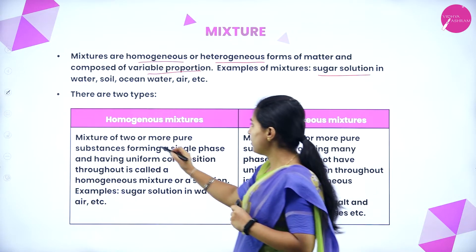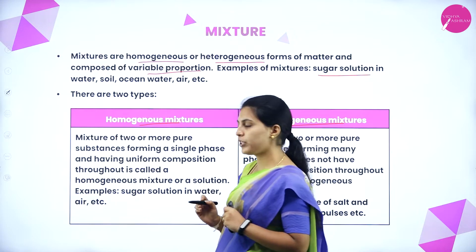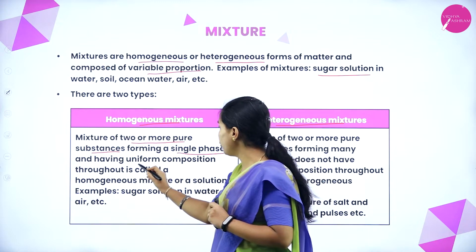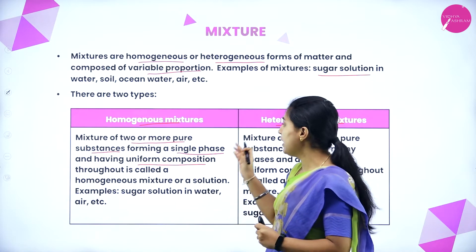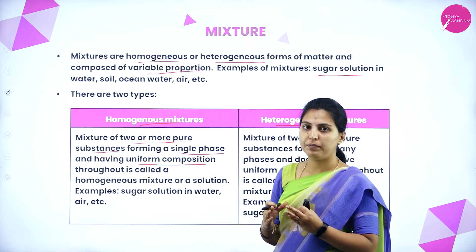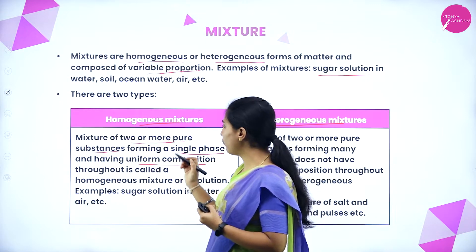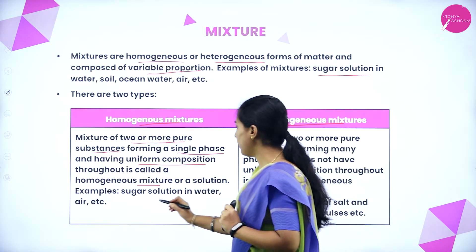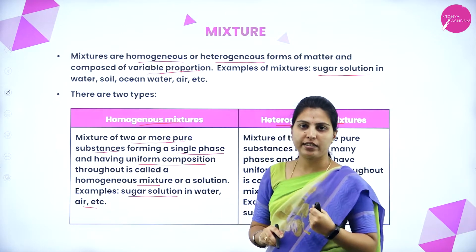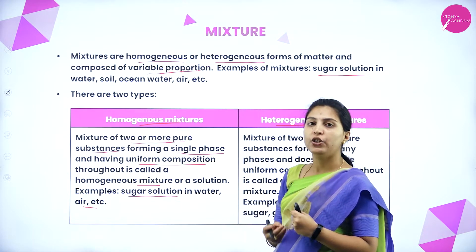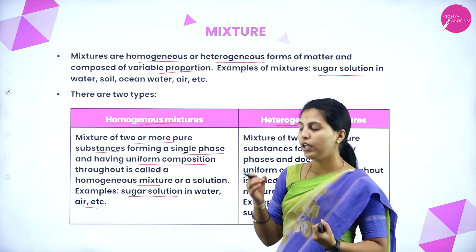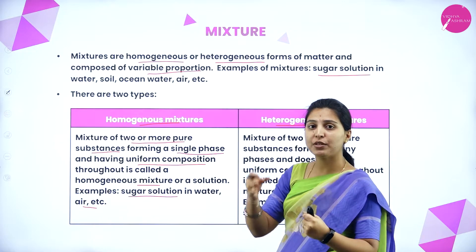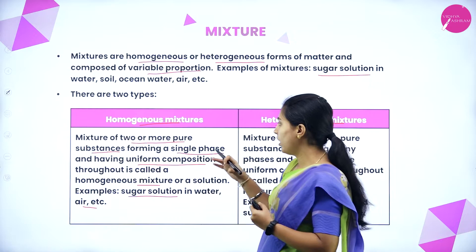A homogeneous mixture is a mixture of two or more pure substances forming a single phase and having uniform composition throughout. It is also called a solution. Example: sugar solution in water and air. If you take a sip of sugar solution, you cannot separate the sugar and water — the sweetness is uniform throughout — this is uniform composition.